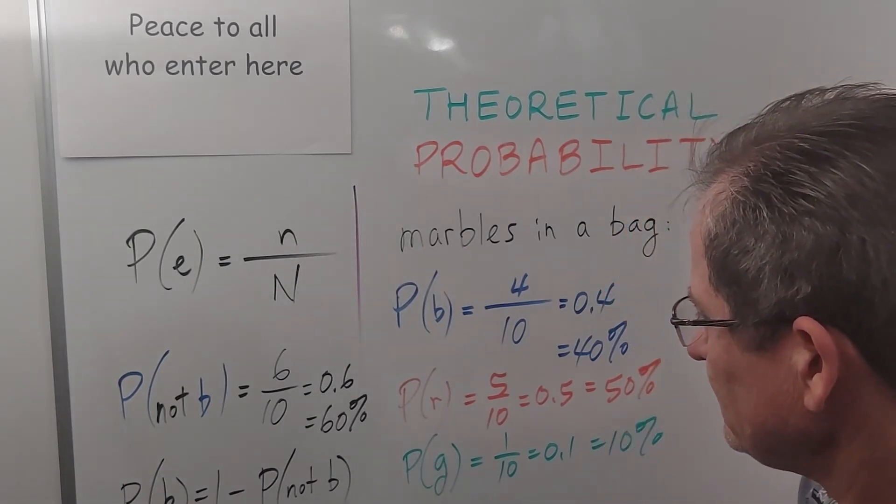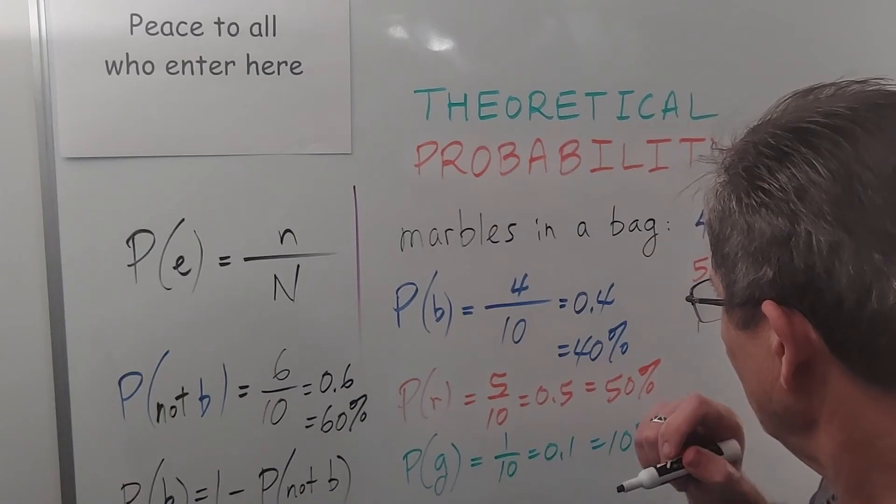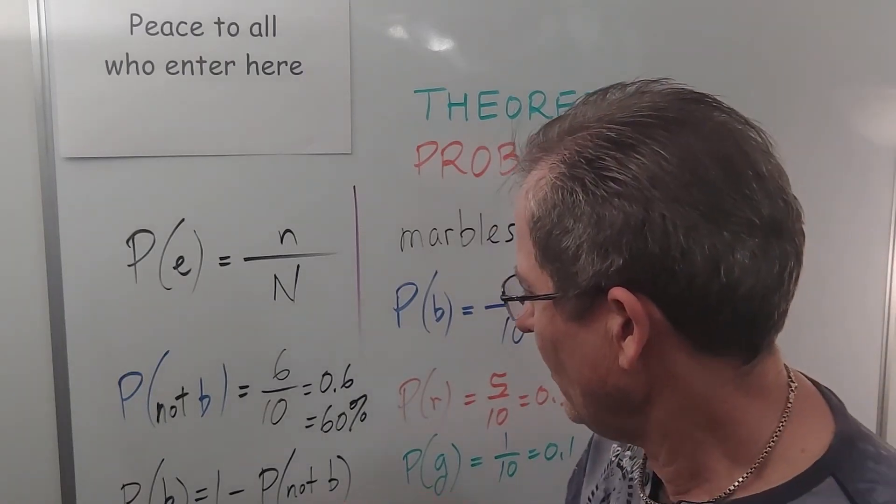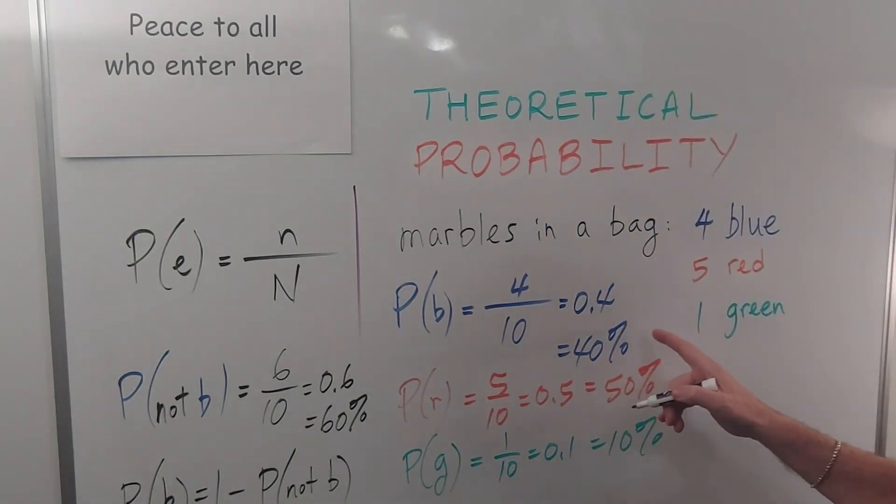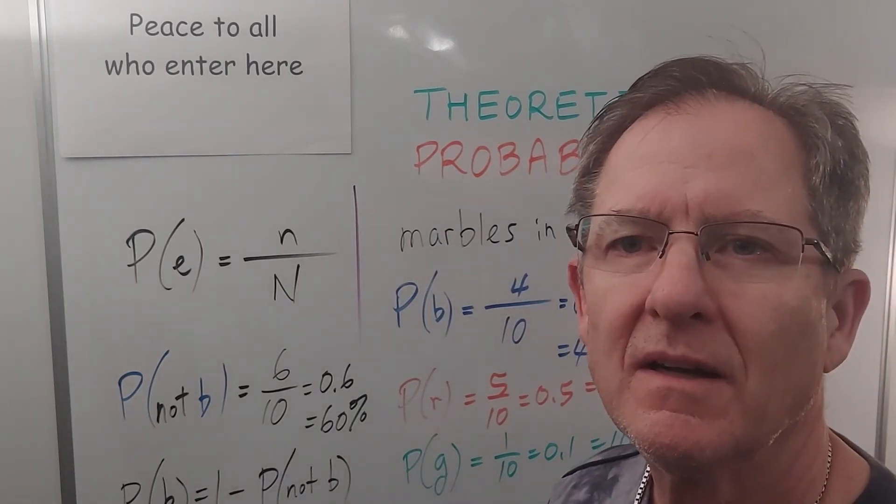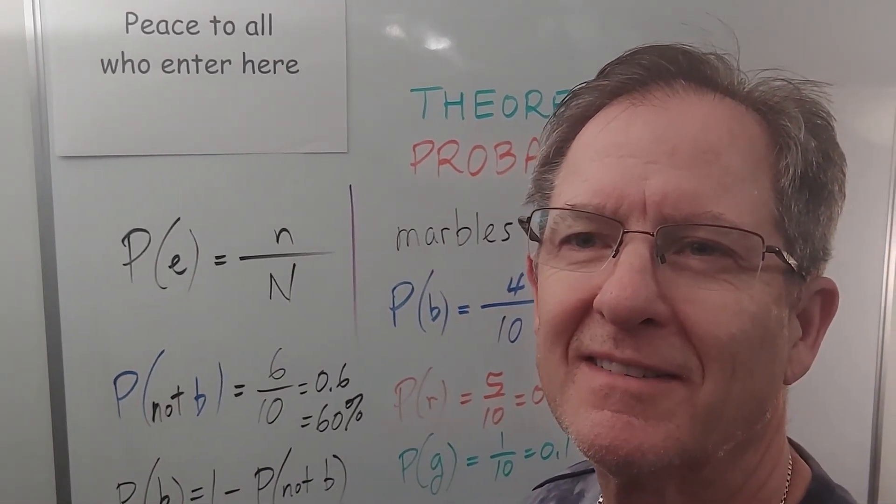And of course, you should realize that all the probabilities would add up to 1. So 40% plus 50% plus 10% is 100% which equals 1. All right. Stay tuned.